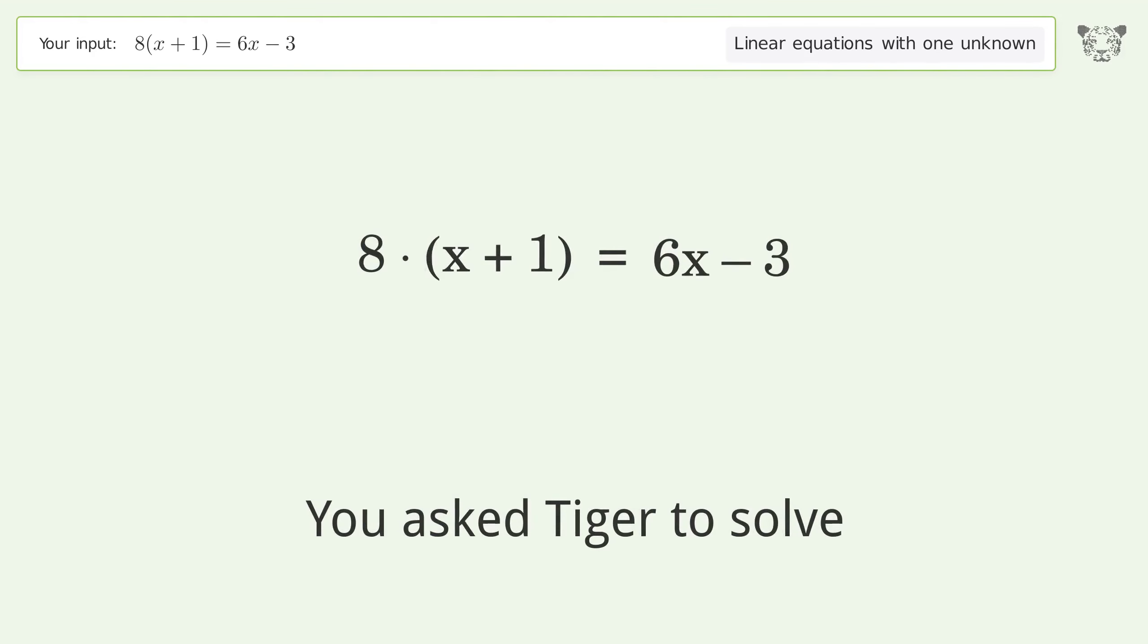You ask Tiger to solve this, which deals with linear equations with one unknown. The final result is x equals negative 11 over 2.